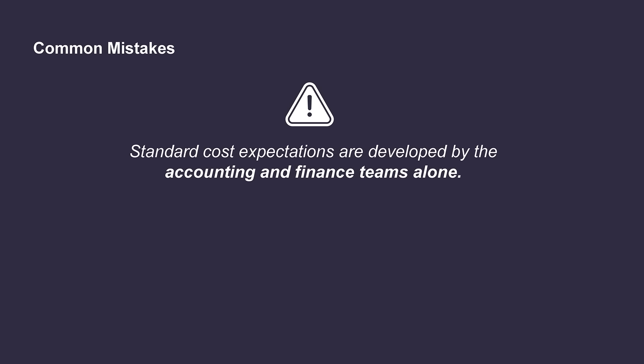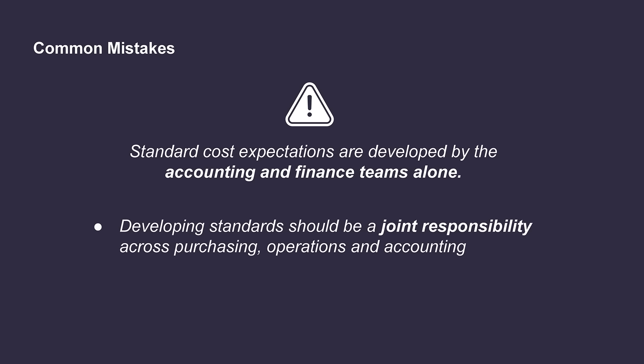It's a common misconception that standard cost expectations are developed by the accounting and finance teams alone. However, developing these standards should be a joint responsibility between a number of different areas of the business, including purchasing, operations, and accounting. While the accounting team has the data on various historical costs and can use that as a starting point, it's important to gather input from the operations team to determine the quantity of inputs to be used in the process. The purchasing team should also be included to help understand current pricing in the market and consider things like discounts, freight, and the quality of the materials. Once all of that data is acquired, it's then the accounting team's responsibility to record the price standards and develop the budget reports that will be used for performance evaluations.